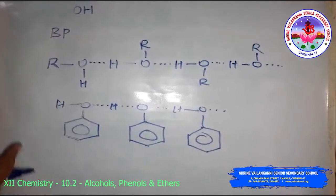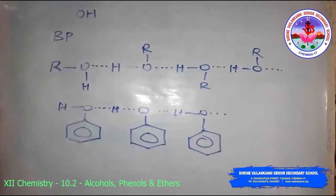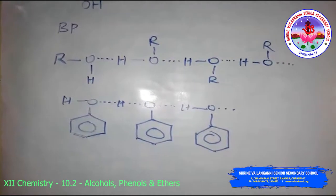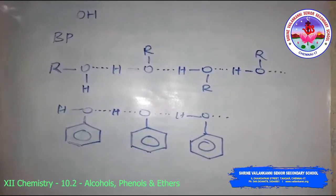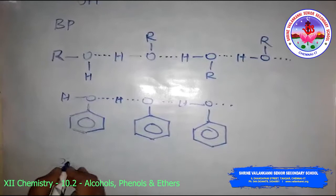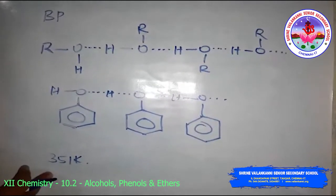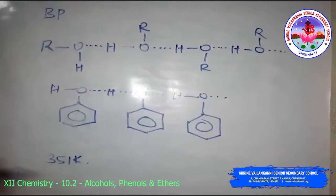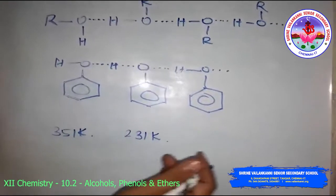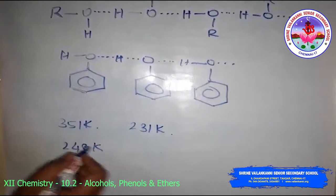It is interesting to note that the boiling points of alcohols and phenols are higher compared to other classes of compounds of comparable molecular masses, such as hydrocarbons, ethers, and haloalkanes. For example, ethanol has a boiling point of 351 K and a molecular mass of 46, whereas propane has a boiling point of 231 K and methoxymethane has a molecular mass of 46 and a boiling point of 248 K.